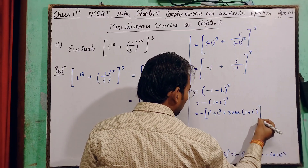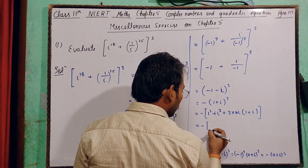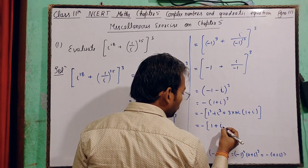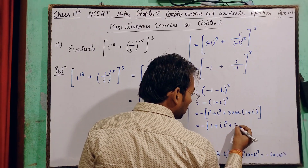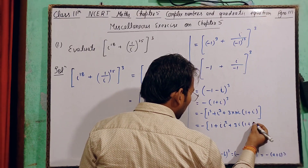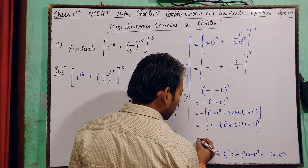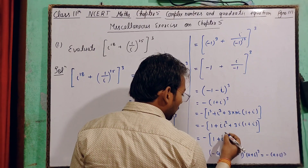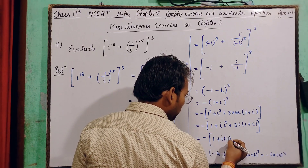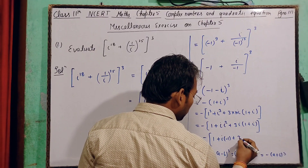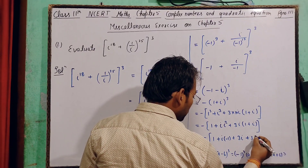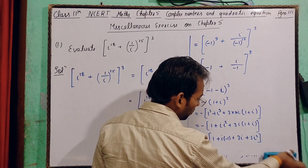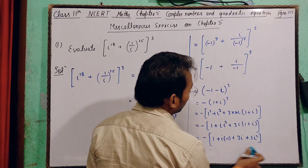-(1 + i)^3 को expand करते हैं: 1³ + i³ + 3×1×i×(1 + i)। i³ = i × i² = i × (-1) = -i। तो यह हो जाएगा: -(1 + (-i) + 3i(1 + i)) = -(1 - i + 3i + 3i²)। i² = -1 रखने पर: -(1 - i + 3i - 3)।